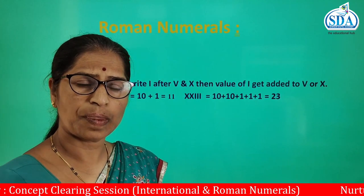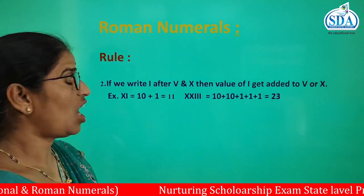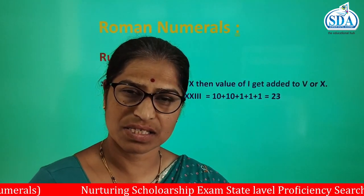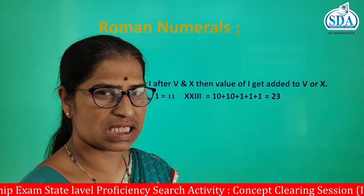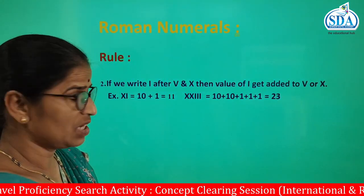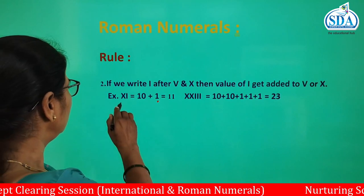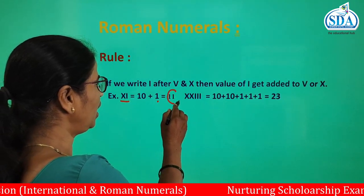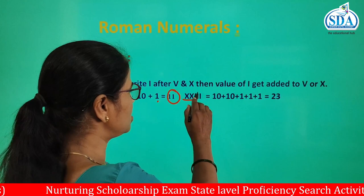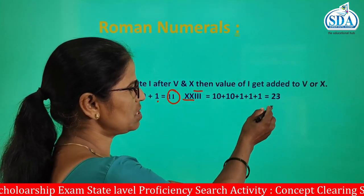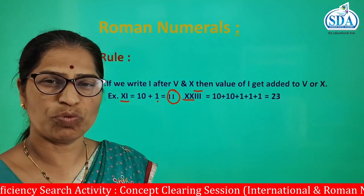Next rule: if I is written after V and X, the value of I gets added to V or X. For example, I is written after X, so the value of I — that is 1 — gets added, and XI represents number 11. In a second example, X is written twice and I is written three times; therefore 10 plus 10 plus 10 plus 1 plus 1 plus 1 equals 33 — wait, that numeral in Roman represents number 23.